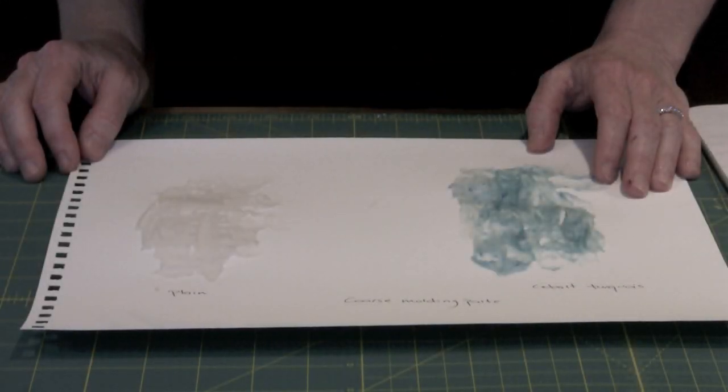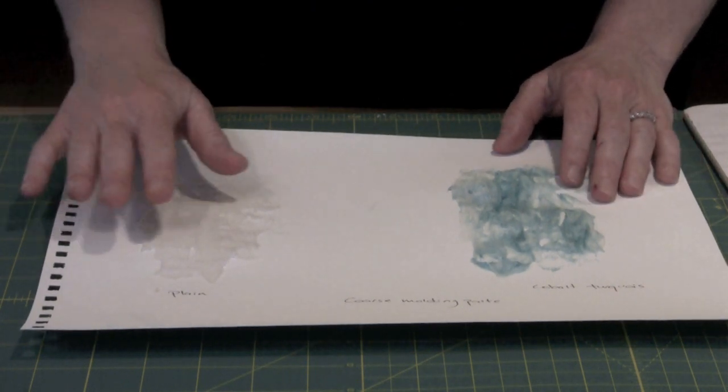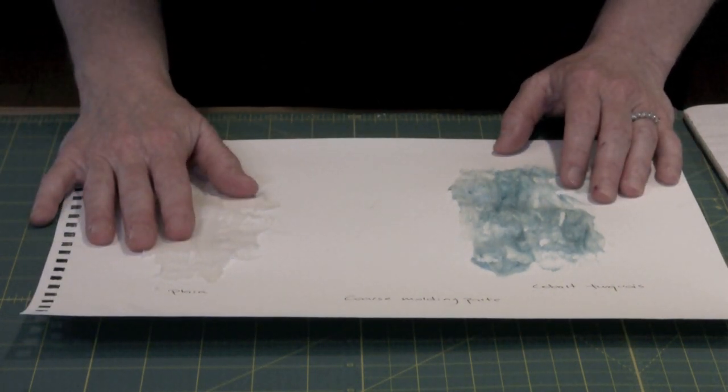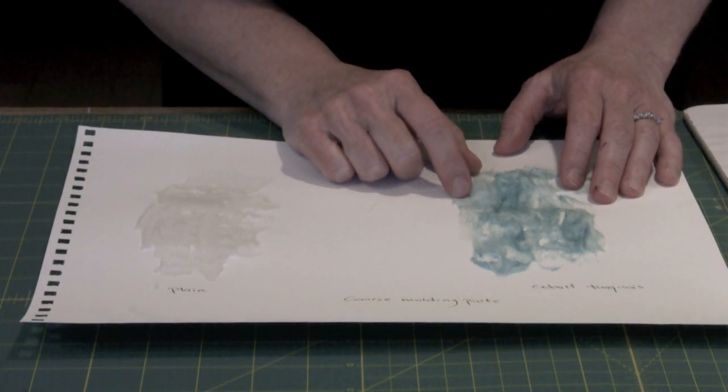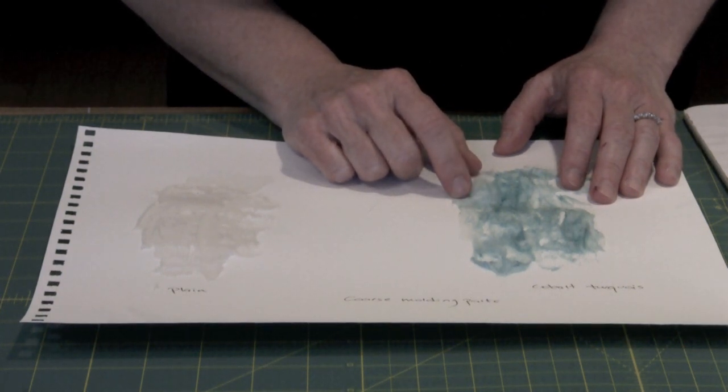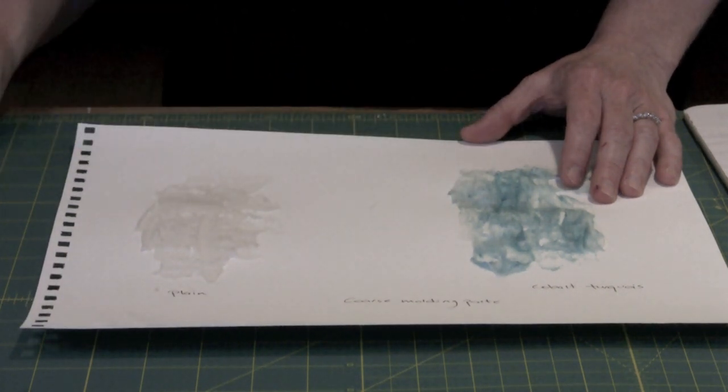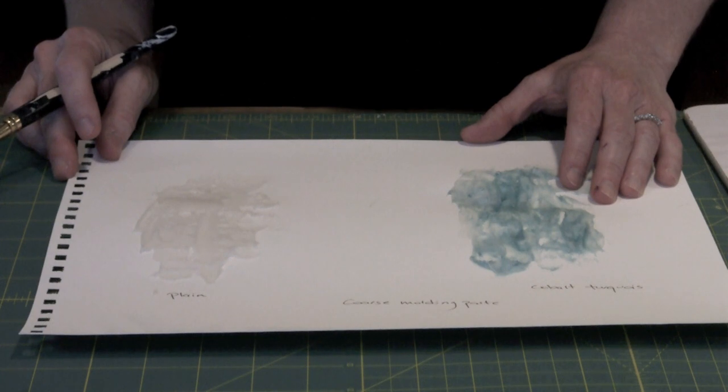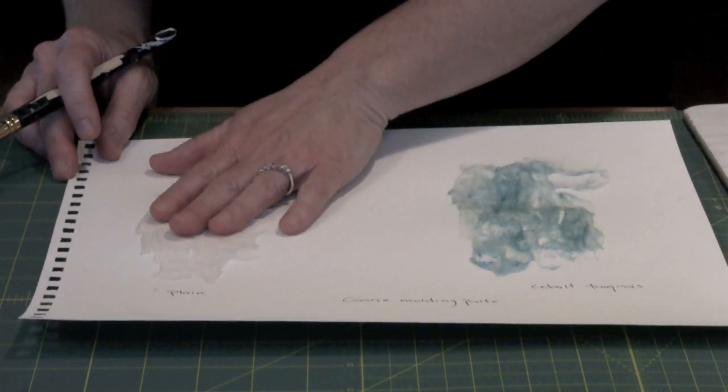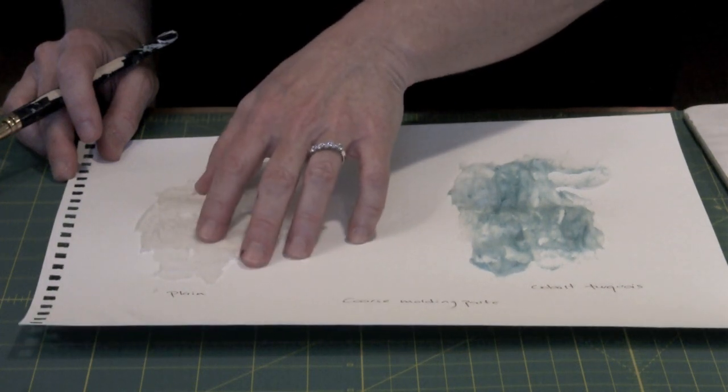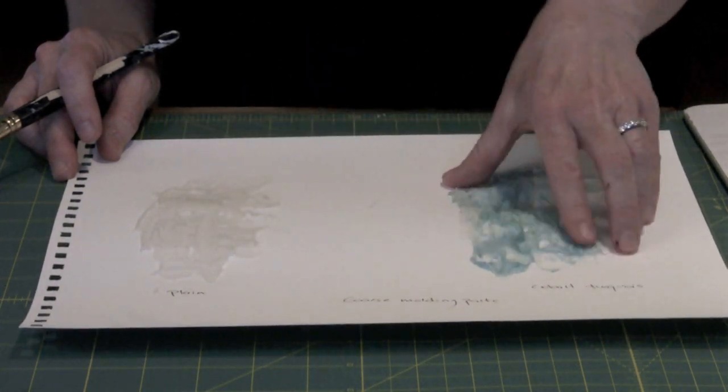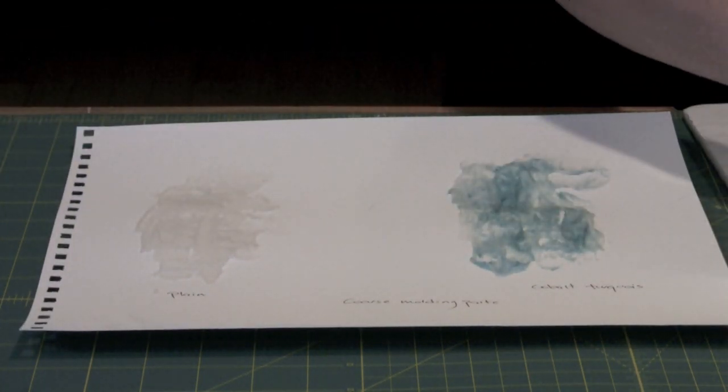This is coarse modeling paste. You can see here I applied it directly to the watercolor paper from the bottle. And here I loosely mixed some cobalt turquoise in it. The nice thing about all these products is that you can mix color into the paste before you apply it to your substrate, and then you can come back after and add more color. I'm going to use some purple here and show you how it looks against the white.